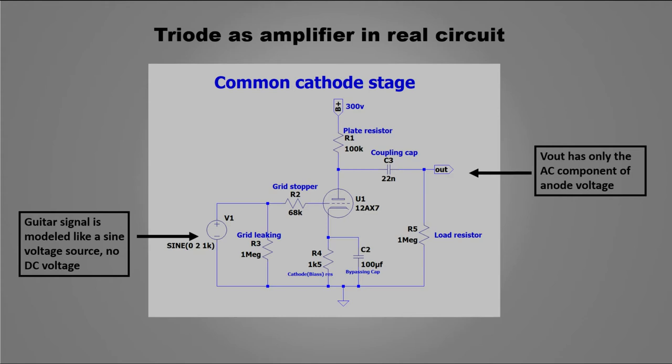In a 12AX7, this cathode voltage will be around 1 volt. And the current from plate to cathode will be around 1 mA.